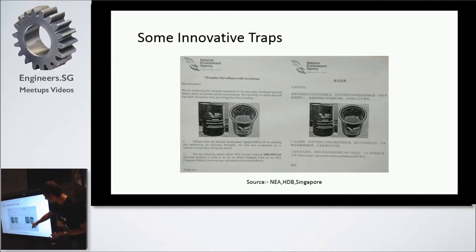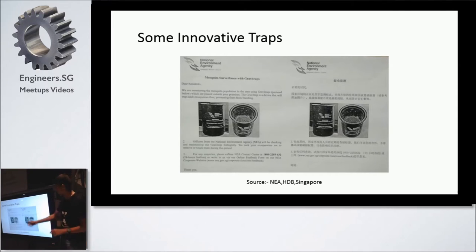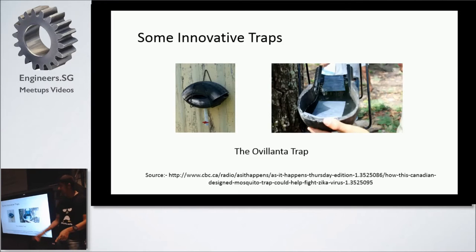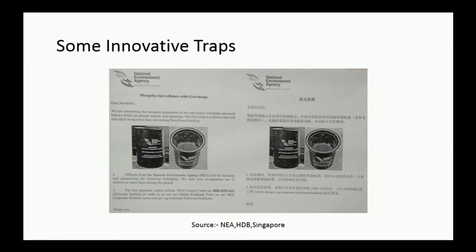During the recent Zika outbreak, NEA put these tiny gravity traps in the staircase and elevator, with posters saying don't touch them — they attract mosquitoes and trap them. I wrote to NEA asking how it works and they said they can't reveal it. There's another trap by a Canadian guy called the Ollivanta trap: they put water and a small tissue in a tire. The water attracts mosquitoes to lay eggs and deposit pheromones. Each day, people take out the tissue, destroy the eggs, and put a fresh tissue back. The water retains the pheromones, keeps calling more mosquitoes, and slowly the breeding ground is eliminated altogether. I'm assuming the NEA traps use a similar mechanism.